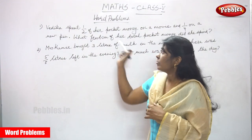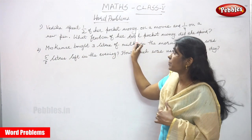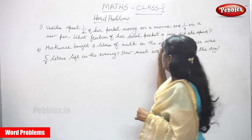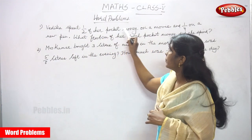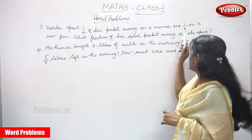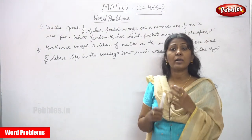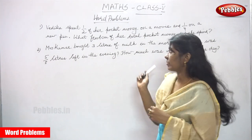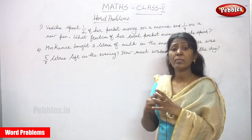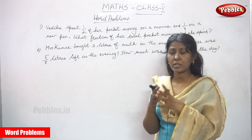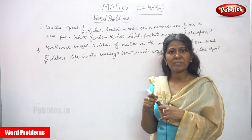First question: Vedika spent 1 by 2 of her pocket money for a movie and 1 by 4 on a pen. So what fraction of the total pocket money did she spend? The word 'total' is the clue — total means addition.